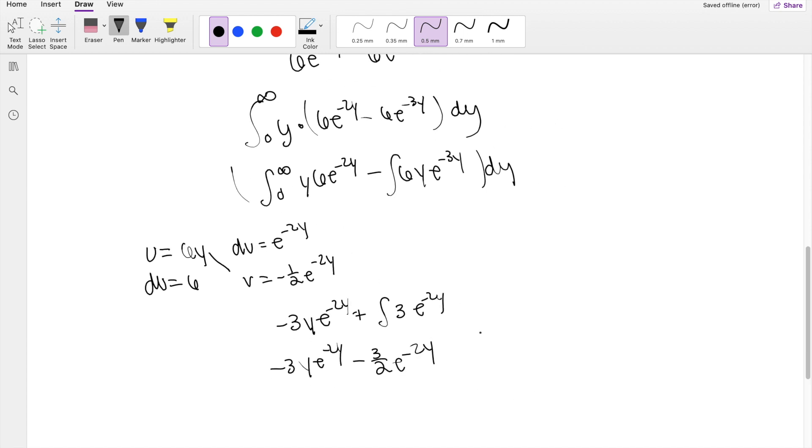And then likewise, this side is going to be the same thing. But then there's a minus in the front, so that's going to be minus minus, that's positive. 2y e^(-3y) minus minus, that's positive 2/3 e^(-3y). Integrating all of this from 0 to infinity.